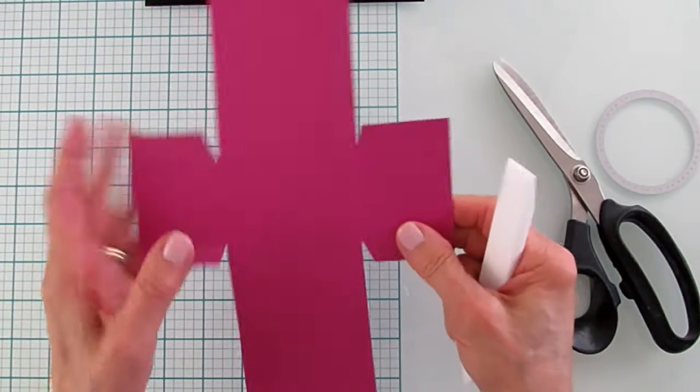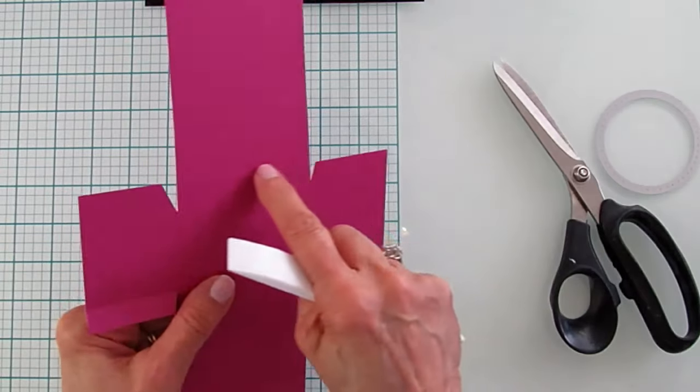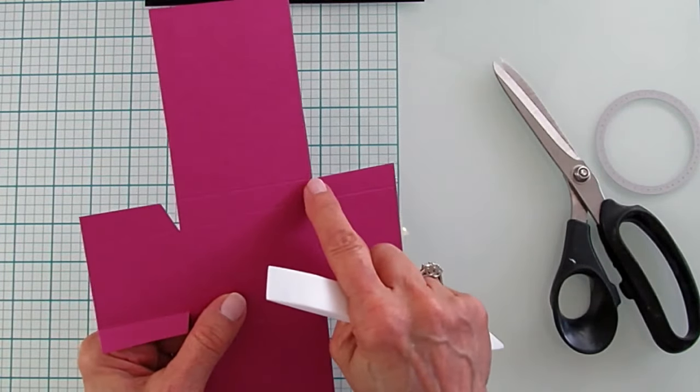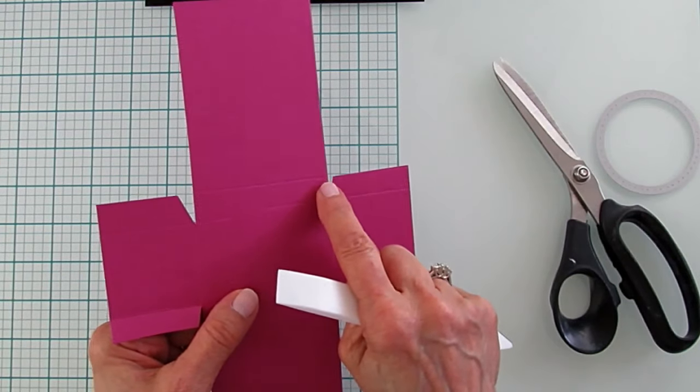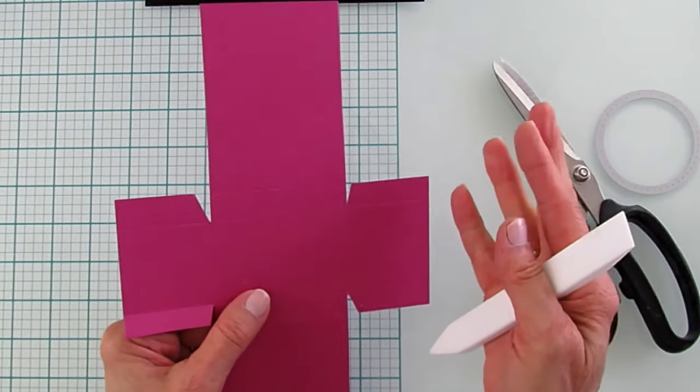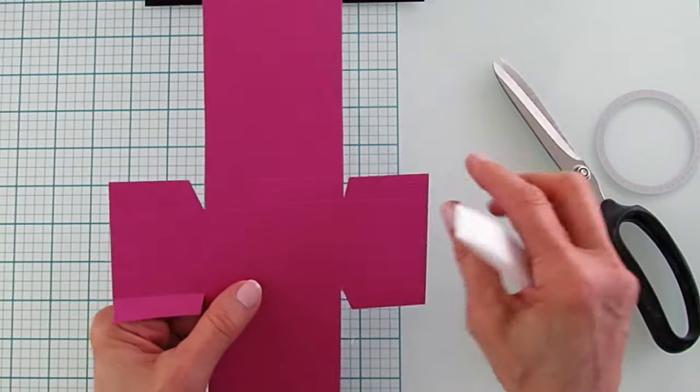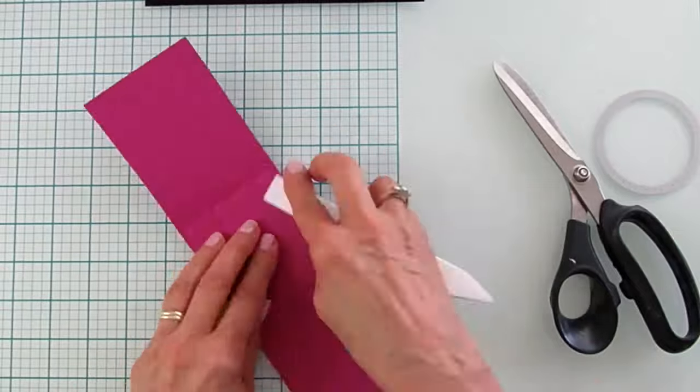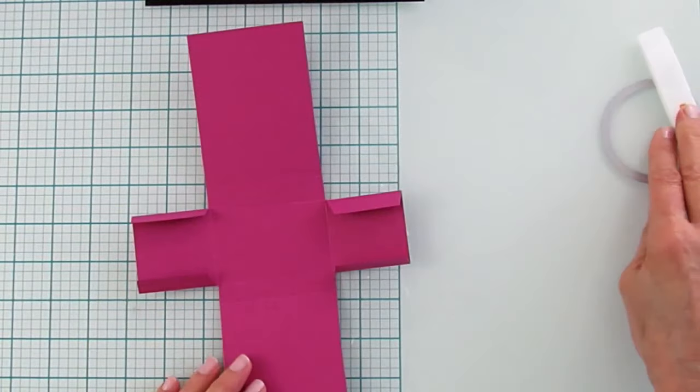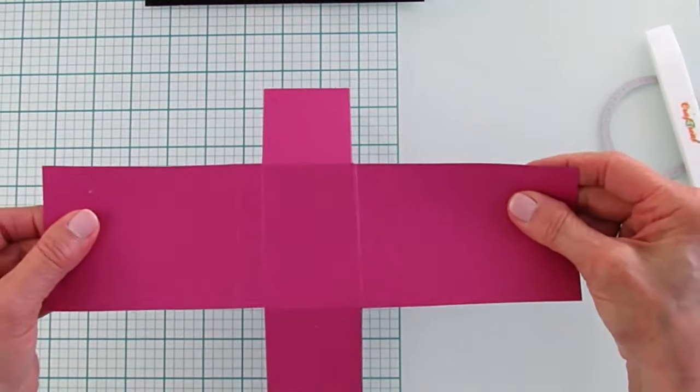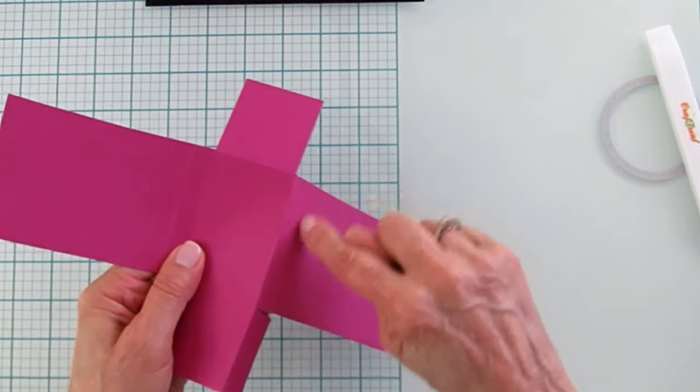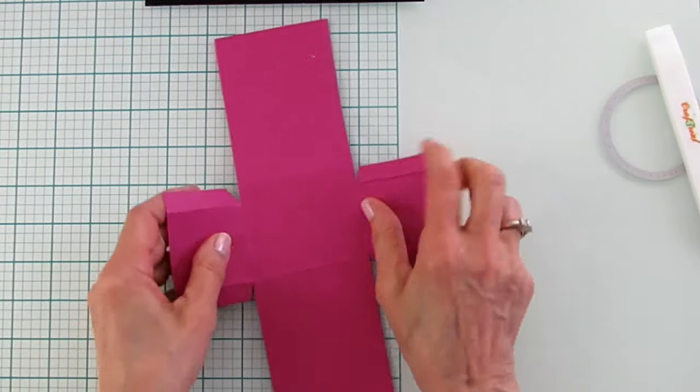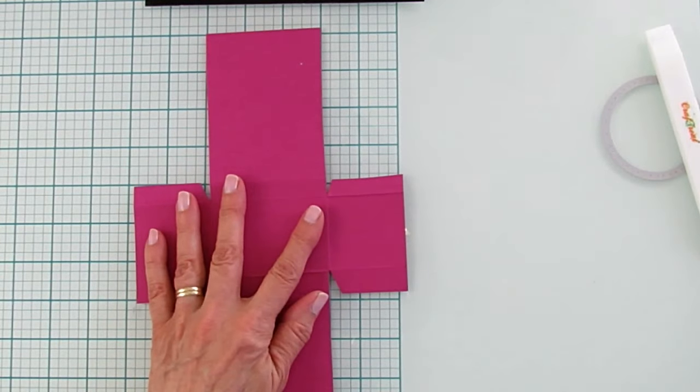All right. So I'm going to take my bone folder. And you're going to see a mark right here. If you don't want that mark, you can score it just up to that score mark there. And then you won't have this. But we're matting it. So that's not going to be a problem.